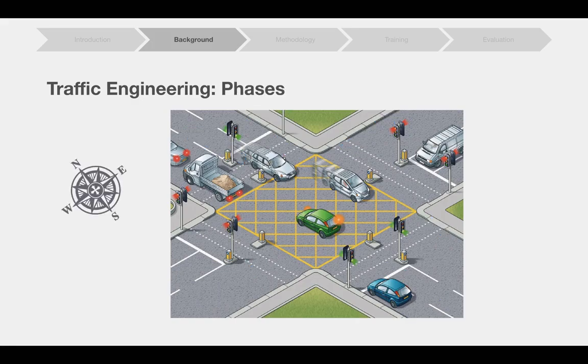while outgoing approaches are the lanes that leave the intersection. Phases are a group of movements from incoming approaches to outgoing approaches which do not generate conflicts or car crashes. In the example,